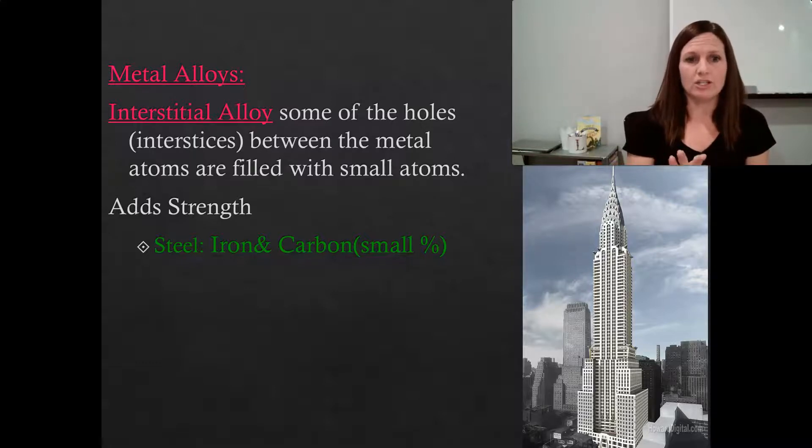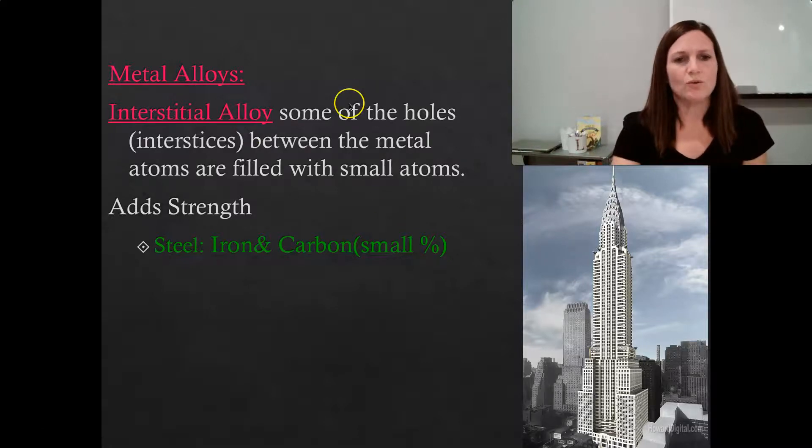Steel is made from a combination of iron and carbon. And what we do is we fill some of the holes, which are called interstices. The hole, the space is called an interstice. We fill those holes with small atoms.